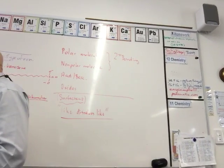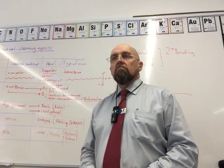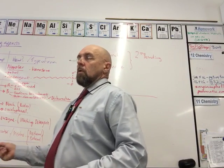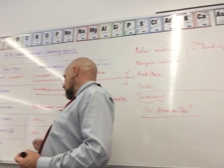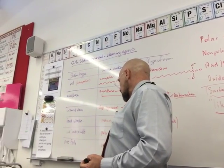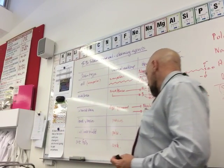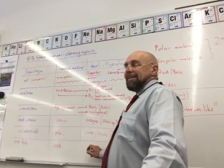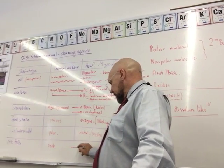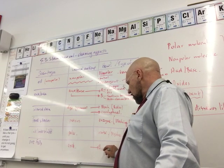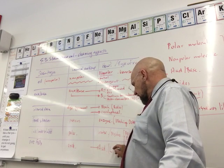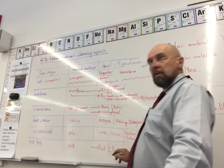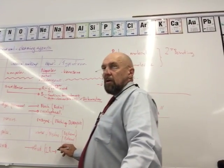The last thing is rust - iron oxide. What would you use to get rid of rust? It's just an oxide, so it's polar. We would get rid of the oxide - we can actually use an acid to get rid of that. It will dissolve the oxide, and stuff like CLR - if you look at the contents of that, it's got phosphoric acid.